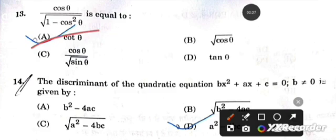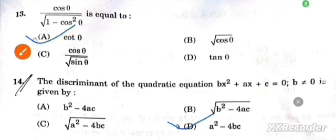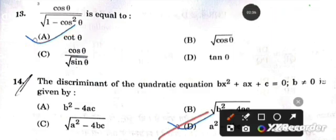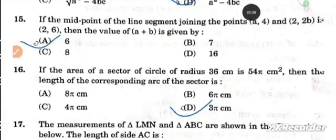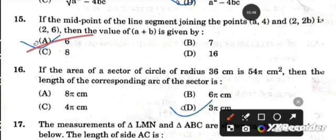Next question: The discriminant of the quadratic equation where b is not equal to zero is given by a² - 4bc. Next question: If the midpoint of the line segment joining the points (a, 4) and (2, 2b) is (2, 6), then the value of a + b is given by 6.